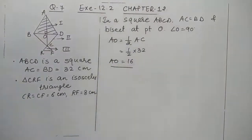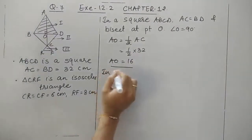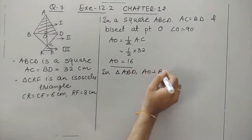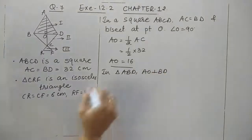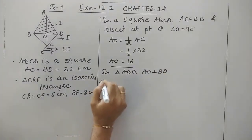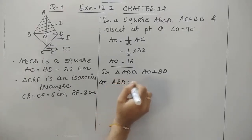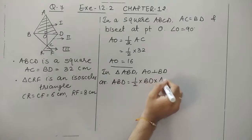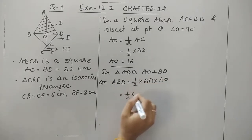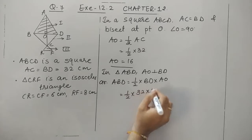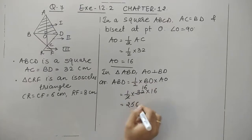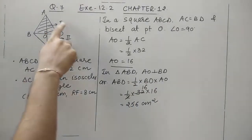In triangle ABD, AO is perpendicular to BD, so we can use this to find the area. Area of triangle ABD equals half into base BD into height AO, which is half into 32 into 16, giving us 256 centimeters square.